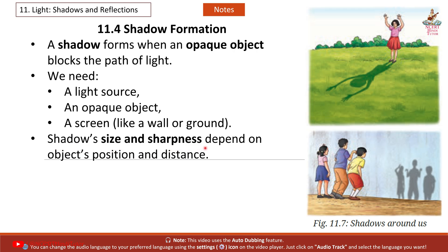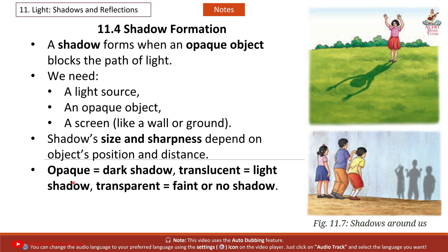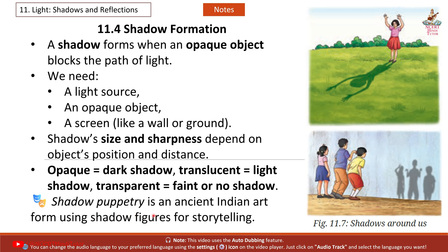Shadow size and sharpness depend on object's position and distance. Opaque: dark shadow. Translucent: light shadow. Transparent: faint or no shadow. Shadow puppetry is an ancient Indian art form using shadow figures for storytelling.